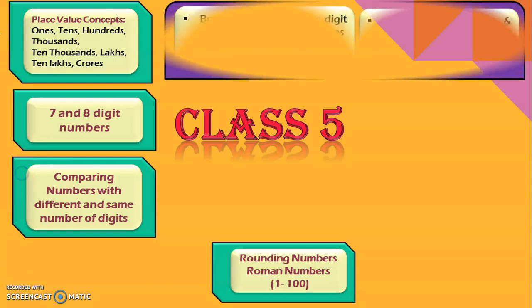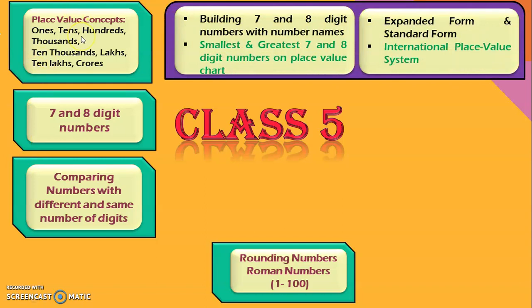Now, let us have a detailed look at what all we will be learning under each of these concepts. To begin with, under place value concepts, we will learn to build 7- and 8-digit numbers with number names. Then, this is something new we will be doing in class 5. We will learn to write smallest and greatest 7- and 8-digit numbers on a place value chart. Next, we will be doing the writing of the 7- and 8-digit numbers in expanded form and standard form. And another new concept that we will be learning in class 5 is about the international place value system.